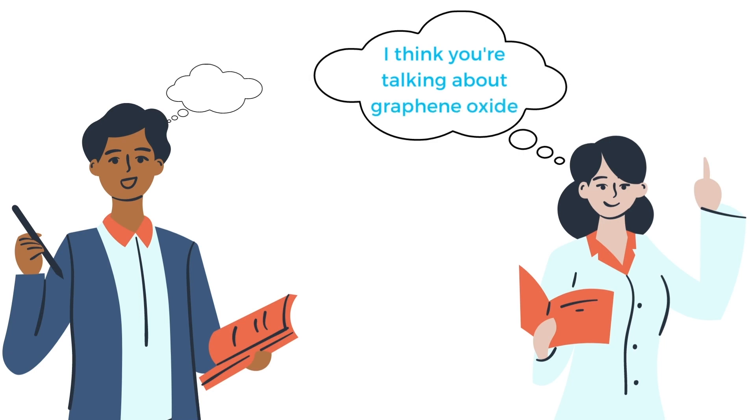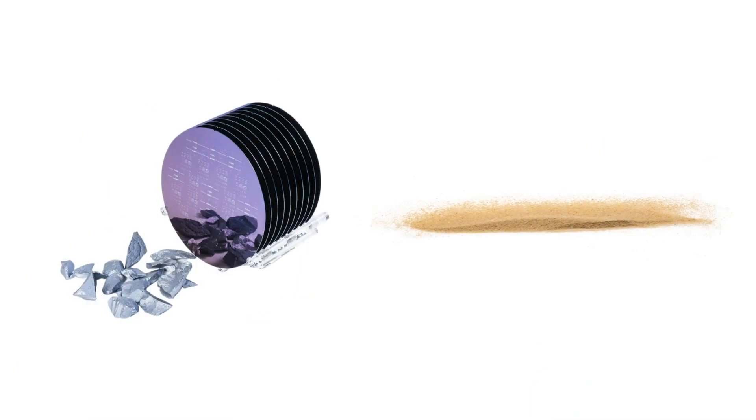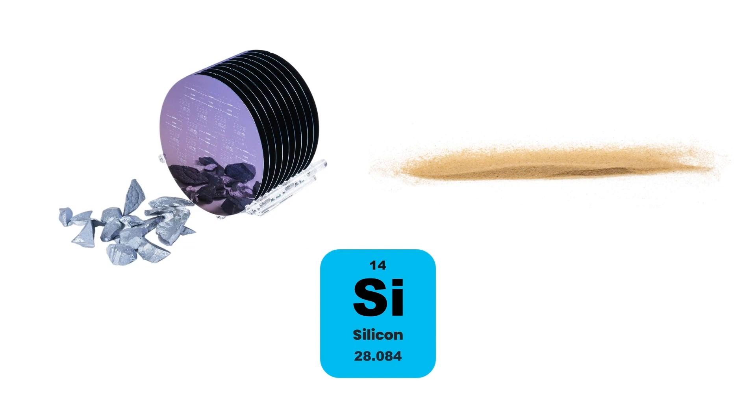As a simple analogy to help clarify the difference between graphene and graphene oxide, think about the differences between a silicon wafer and sand. Both are made of silicon, but sand is very cheap and silicon is extremely expensive. Both are useful though, but in their own unique ways. The same is true for graphene and graphene oxide.